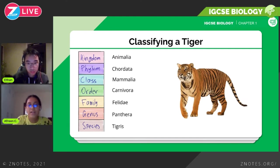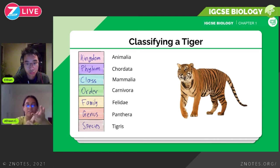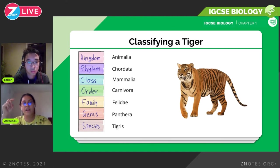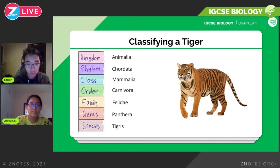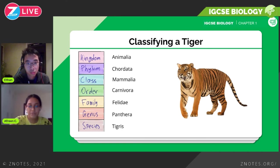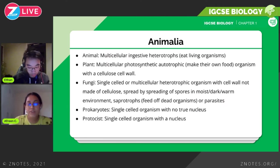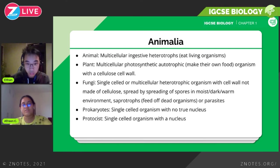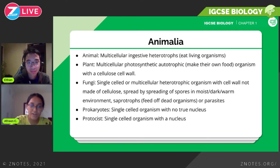As an example, for a tiger: kingdom is Animalia, phylum is Chordata, it's a mammal and a carnivore, genus is Panthera, species is tigris. So the scientific name of the tiger using the binomial naming system is Panthera tigris. There are five kingdoms: Animalia, Plantae, Fungi, Prokaryotes, and Protoctista.